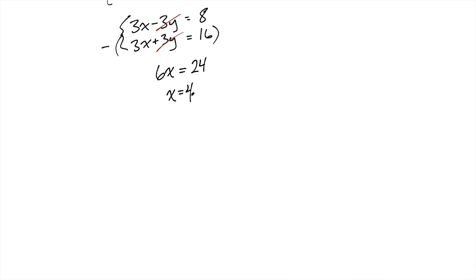To get y we can plug that back into one of these equations. If I plug it into the first equation, I get 3 times 4 minus 3y equals 8. That's 12 minus 3y equals 8, so 3y equals 4. Dividing by 3, I get y equals 4 thirds.